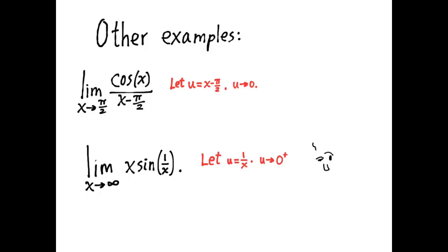As x approaches infinity, u, which is 1 over x, approaches 0 from the right. Do you find that to be confusing? Well, just take a look at some values of x and u.